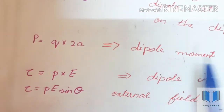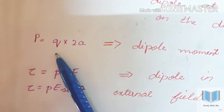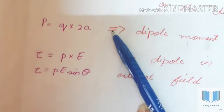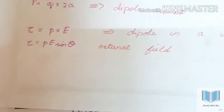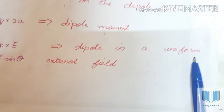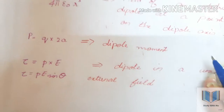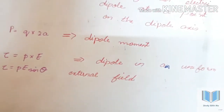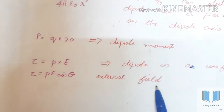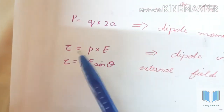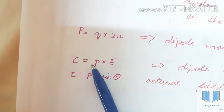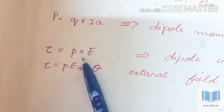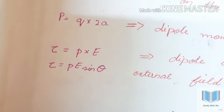The dipole length is 2a. Next, for a dipole in a uniform external field, the torque is equal to p cross E. This is the cross product formula: τ equal to p into E. You can apply this.